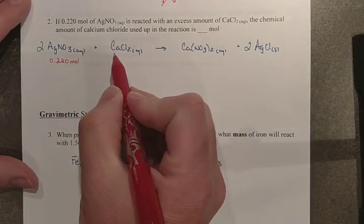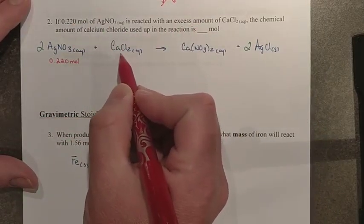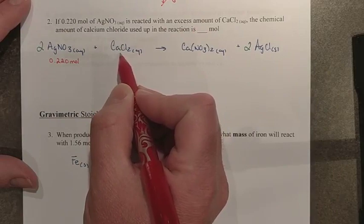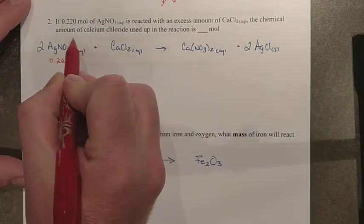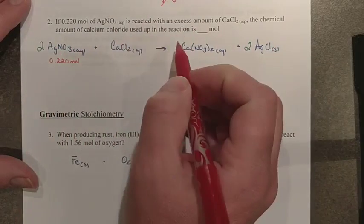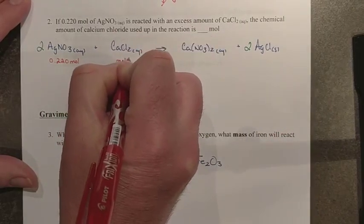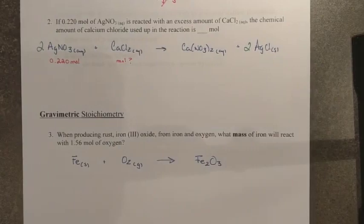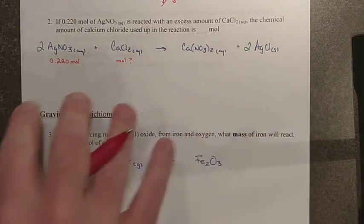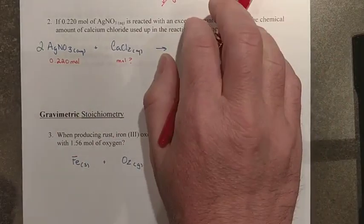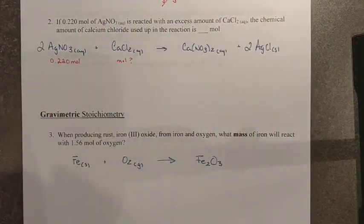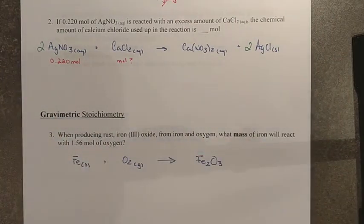And in this one, we're told we reacted with an excess amount of CaCl₂, but the question goes on to ask us, how much was actually used in moles? So we're still looking for moles of CaCl₂, even though we know it's the excess reagent. I can use stoichiometry to find information about products, I can use it to find information about other reactants as well. It can be used for any part of the equation.